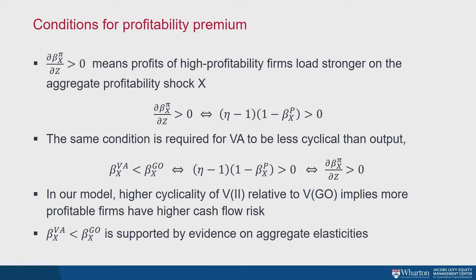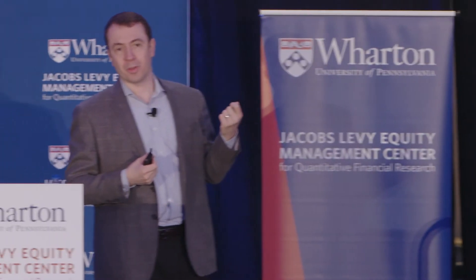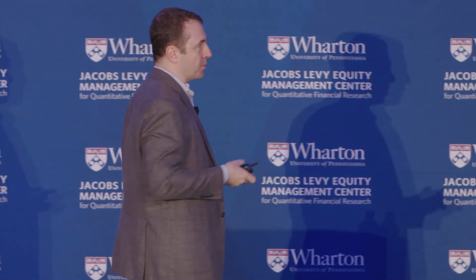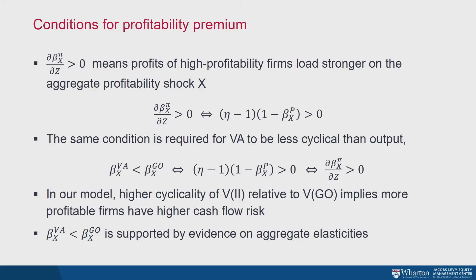What we are hoping to find is that it's an increasing function — so more productive firms are more risky. The condition for the model to imply that more productive firms have relatively high cash flow risk is a condition on this partial derivative: as long as the derivative of the risk measure beta on idiosyncratic profitability Z is positive, more profitable firms are more risky. For that condition to hold, we need the product of (eta minus 1) times (1 minus the beta of input prices on X) to be greater than zero.